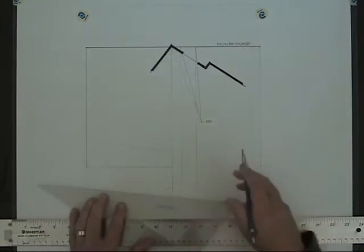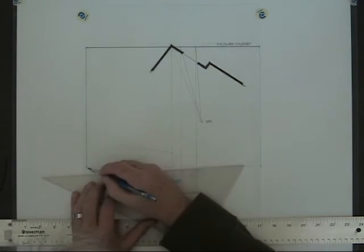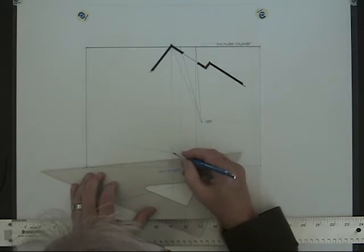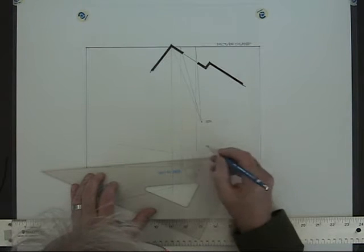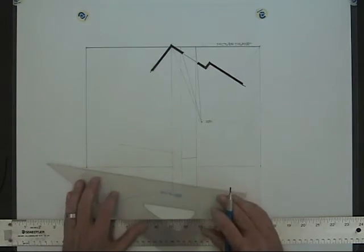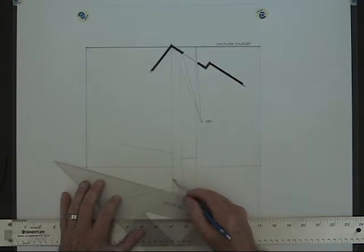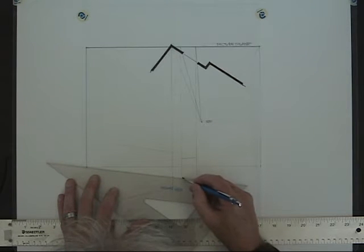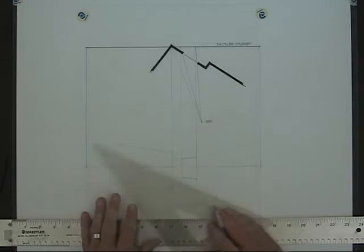Now the height of this window, I will make it from the vanishing point, going through the eight foot indication on the wall. That represents the top of the window. And I'll make my window one, two, three feet above the floor.